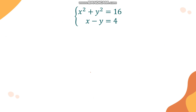Now let's solve the following system of nonlinear equations using substitution. We have x squared plus y squared equals 16, and x minus y equals 4. Using substitution, we choose one equation and identify the value of one variable. It is easier to use equation 2, so using x minus y equals 4, we will solve for x.